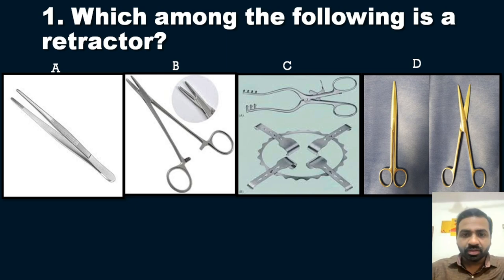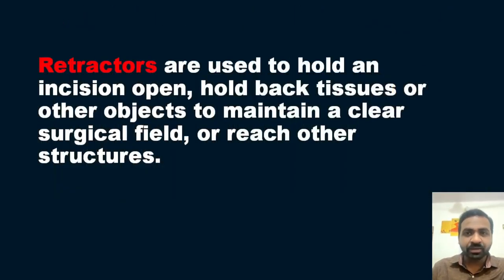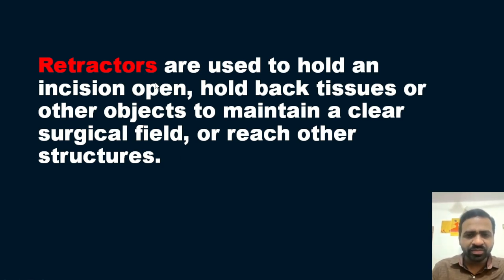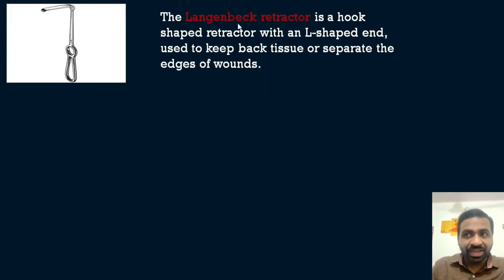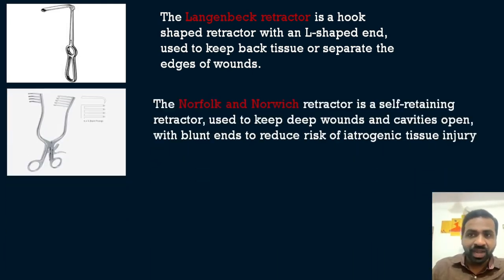The answer is option C — these are types of retractors. Retractors are surgical instruments used to hold an incision open and hold back tissues or other objects to maintain a clear surgical field or reach other structures. The first type is the Langenbeck retractor — a hook-shaped retractor with an L-shaped end, used to keep back tissues or separate the edges of a wound.